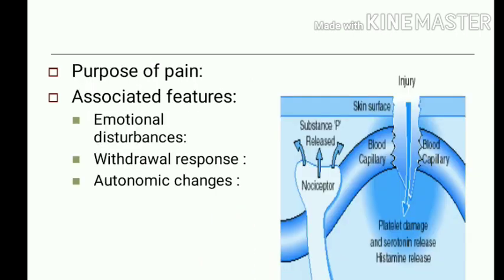The purpose of pain is not merely to inform us about pain sensation but to inform us about damage to the tissue. Pain is associated with emotional disturbances, with withdrawal response if the pain is superficial, and with autonomic changes like changes in heart rate, blood pressure, respiration, as well as sometimes sweating, nausea, and vomiting.